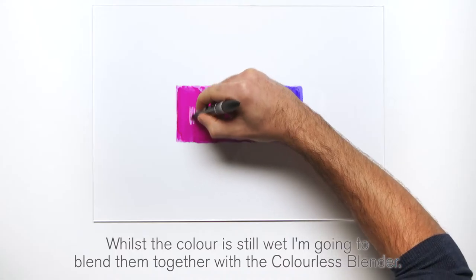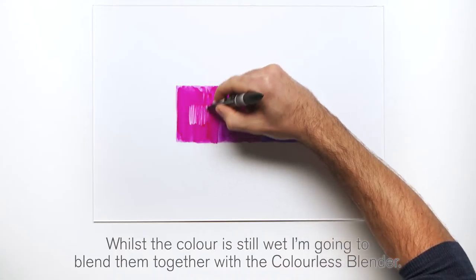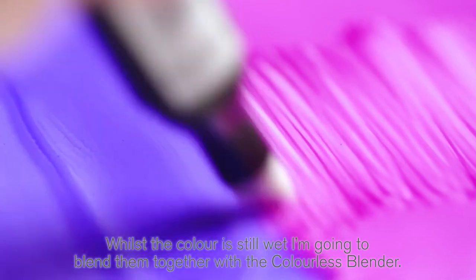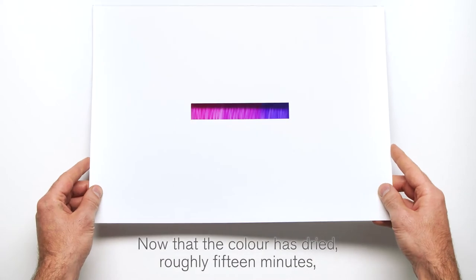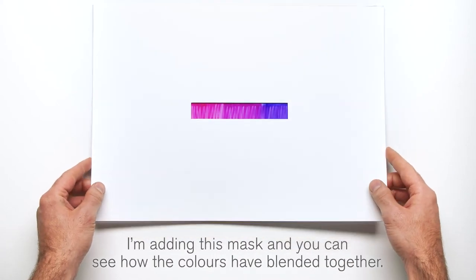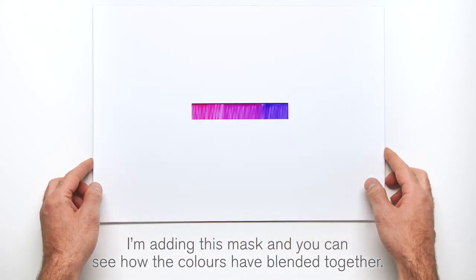While the color is still wet, I'm going to blend them together with the colorless blender. Now that the color has dried, roughly 15 minutes, I'm adding this mask and you can see how the colors have blended together.